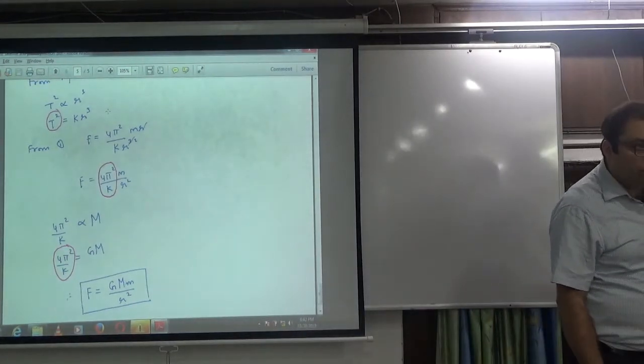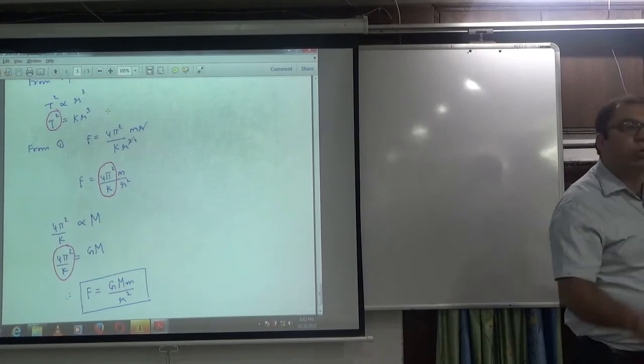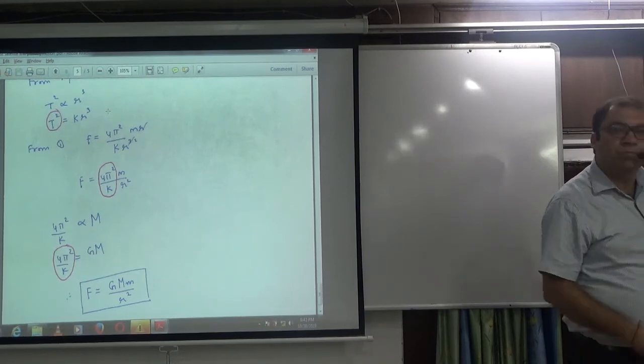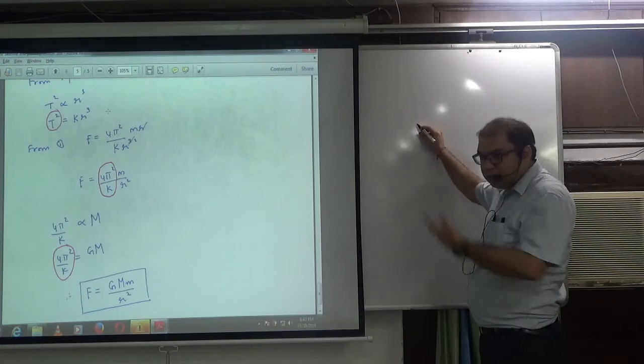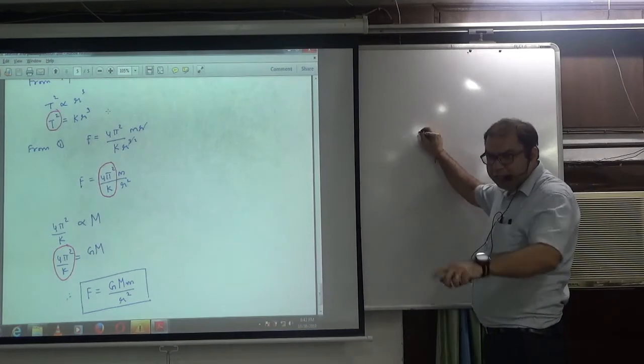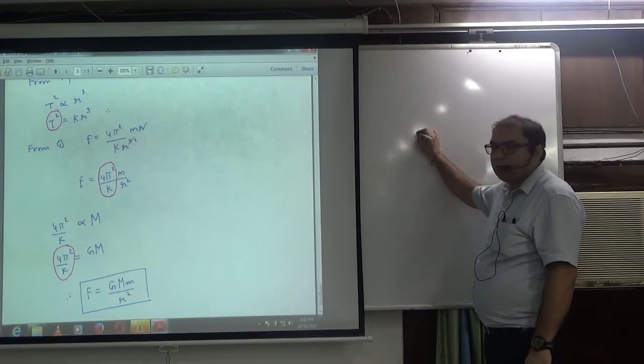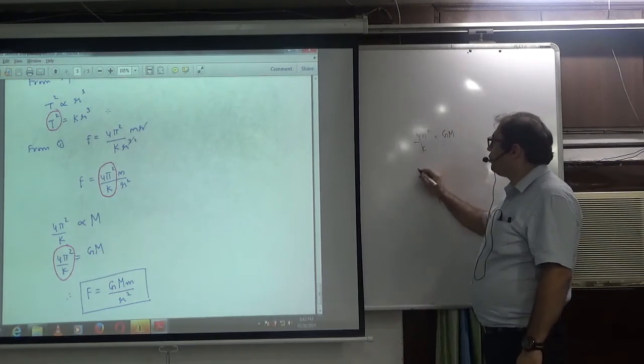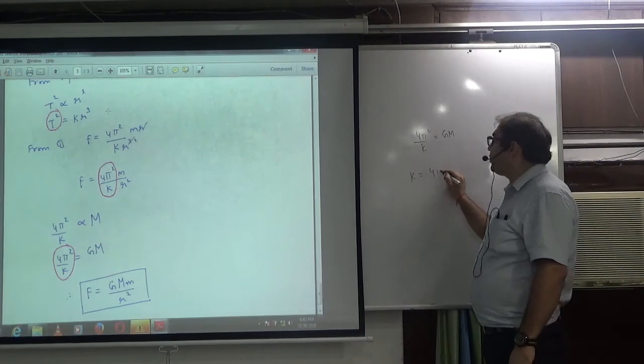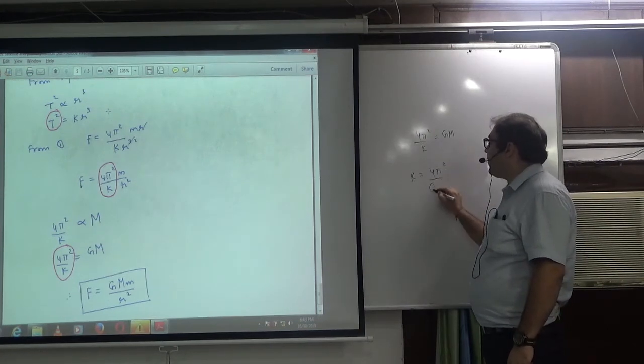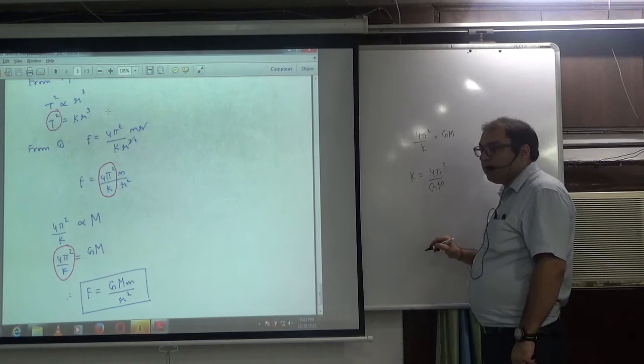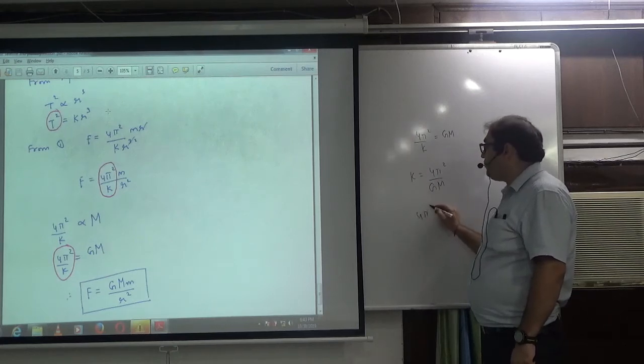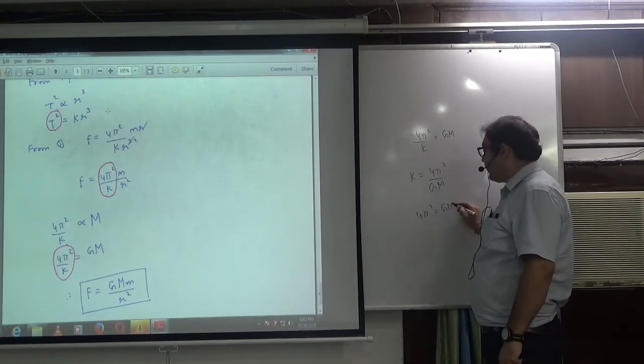Is this clear? This type of derivative has come in medical questions. The value of K is 4π²/GM, and sometimes this appears as an option in exams.